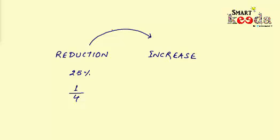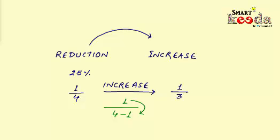In that case, we just need to increase the value of the fraction, which is 1 by 4 here, by subtracting the numerator part from the denominator part, and it will give us 1 by 3, which in percentage is equal to 33 and 1 by 3 percent.